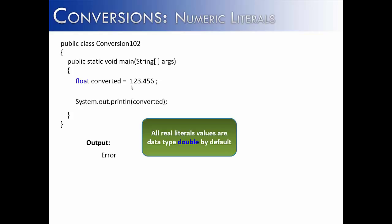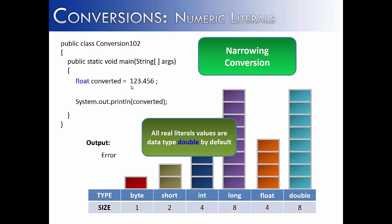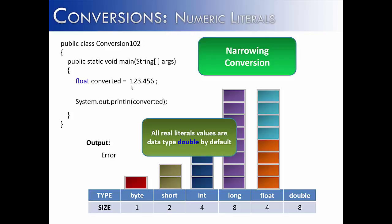So what we're trying to do is we're trying to take a double, which is twice as large as a float, and we're making a narrowing conversion. Well, we can't do this, or if we want to do this, we have to typecast it. Although this looks like it would work, it doesn't work in reality because we're taking a double and trying to store it as a float.